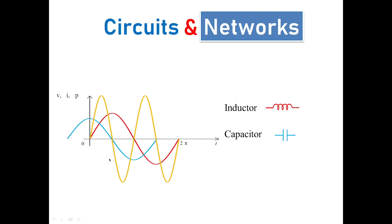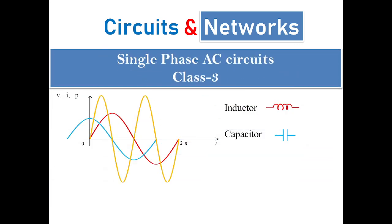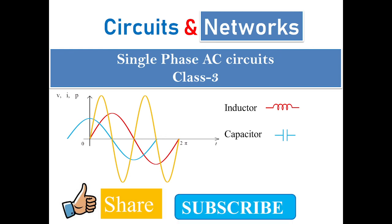This is how we estimate the correlations, waveforms, and phasor representations of passive elements under sinusoidal input. This is class 3. In future classes, we will take combinations of RL, RC, LC, and RLC networks and derive power waveforms and phasor diagrams for those cases. I hope you liked this video. Please share it with your friends, subscribe to my channel, and press the bell icon for future notifications. Thank you.